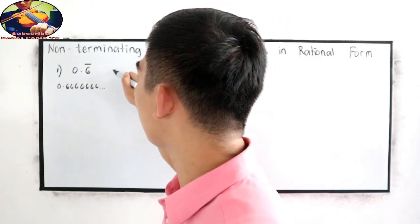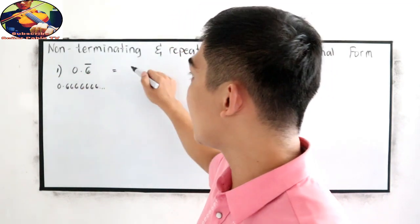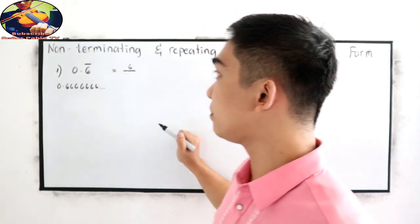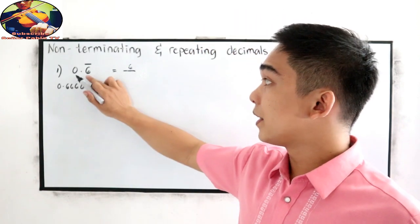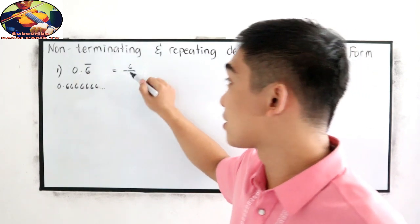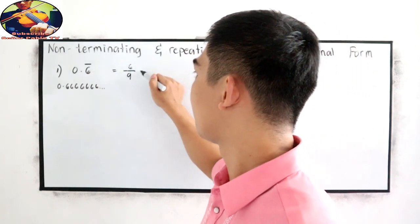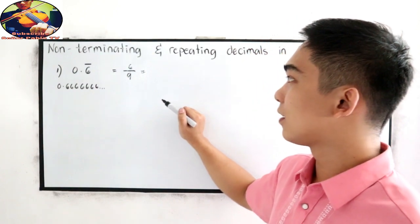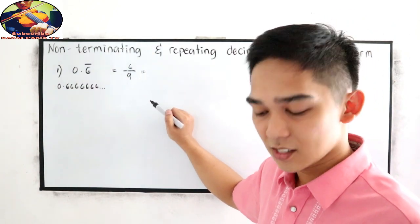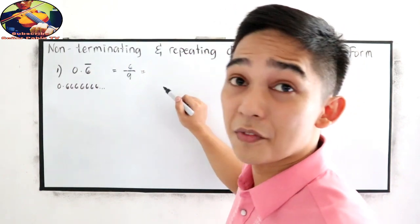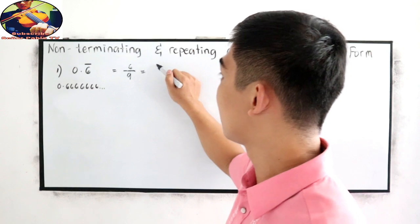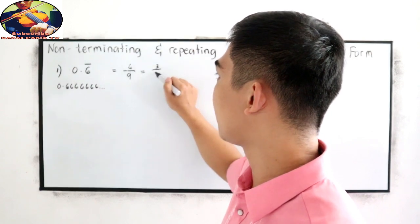Let me teach you our shortcut. That is equivalent to: copy 6 over — instead of writing 0, we're going to use 9. So, 6 over 9. In simplest form, that is divisible by 3, giving us 2 over 3.